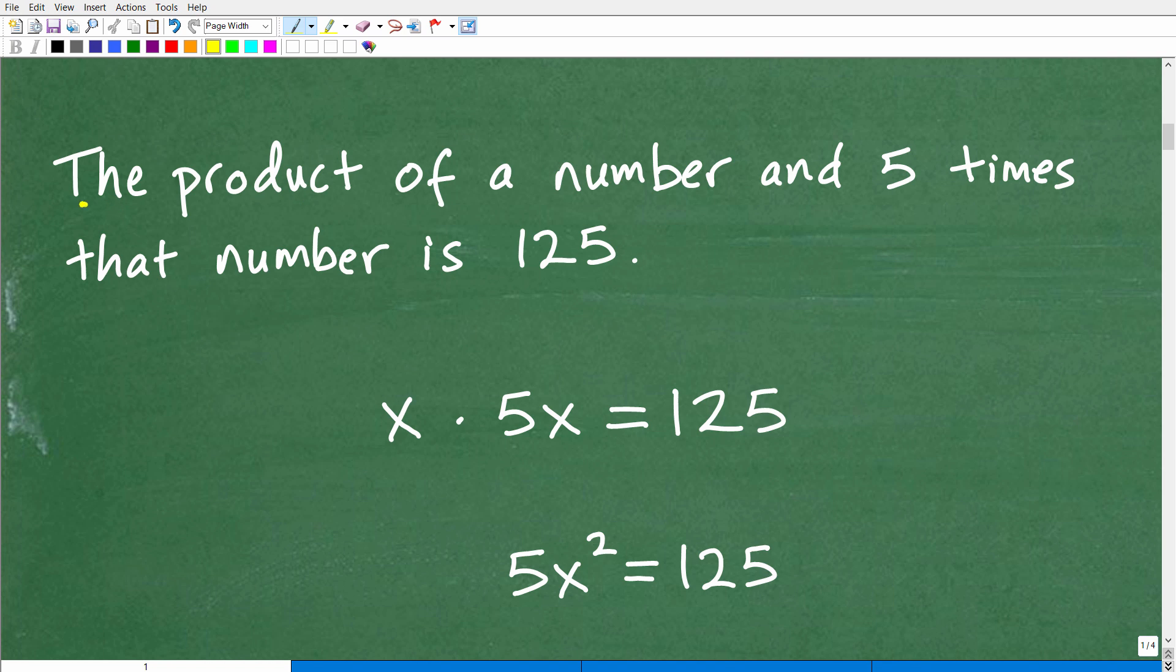So we have the product. Well, what does that mean? The product. Well, the product is the result of multiplication. Okay, so the product of three and two is six. Okay, so the product is multiplying. Okay, so the product is the result of multiplication. All right, so we need to just think of that. Oh, we're going to be multiplying something.